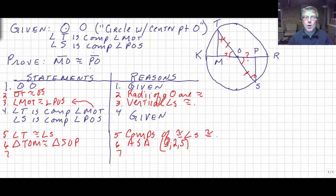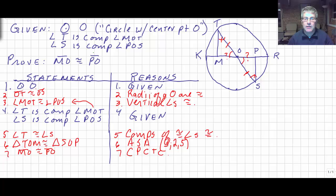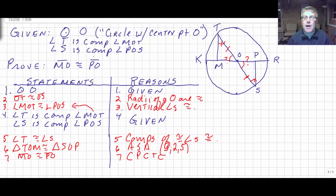We want to get MO congruent to PO. Since MO and PO are sides of our now-congruent triangles, MO is congruent to PO because once we have congruent triangles, all the remaining corresponding parts are congruent — CPCTC, corresponding parts of congruent triangles are congruent. That's an example of how we use circle properties and CPCTC in a proof, and we'll do more practice in class.